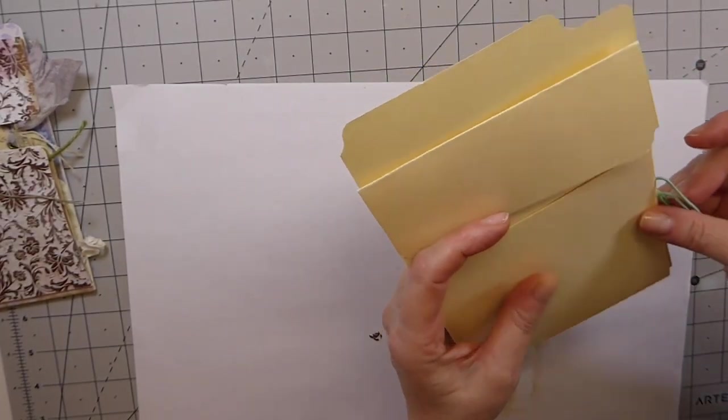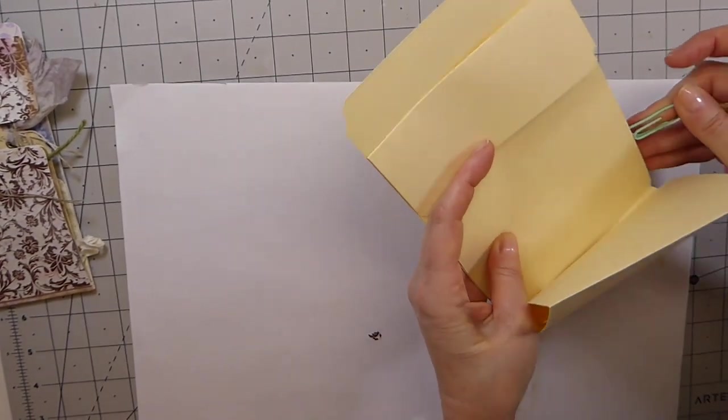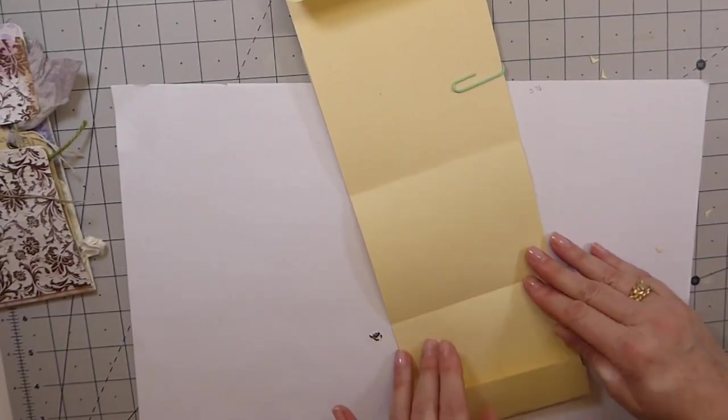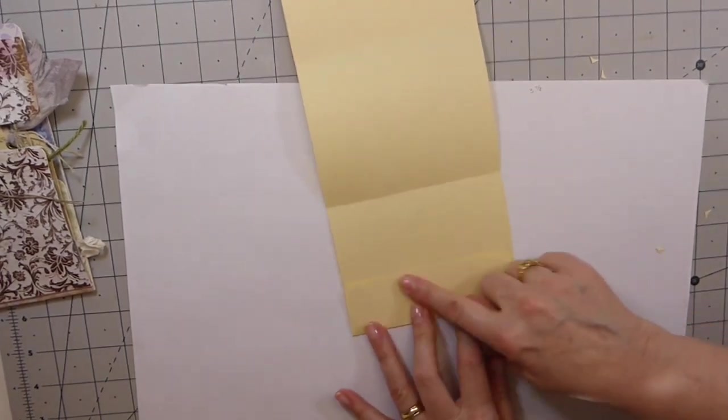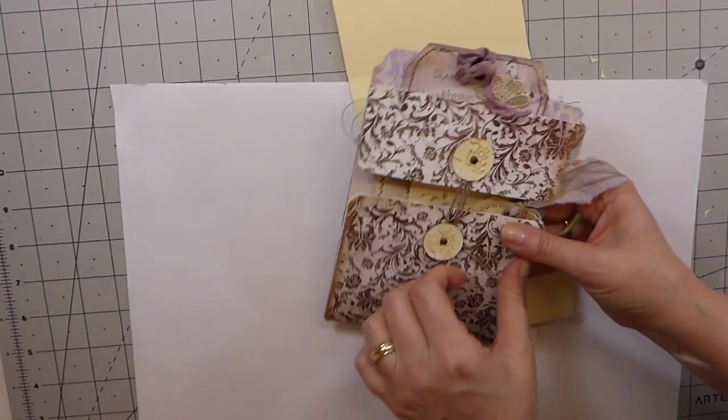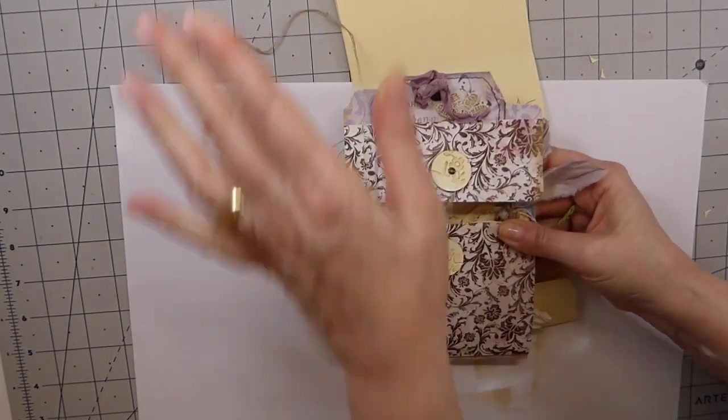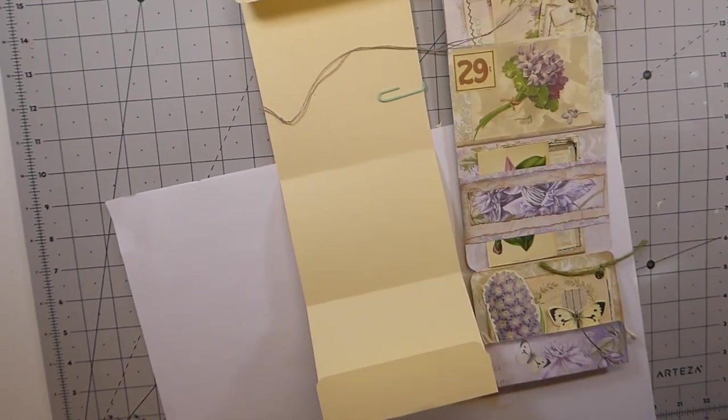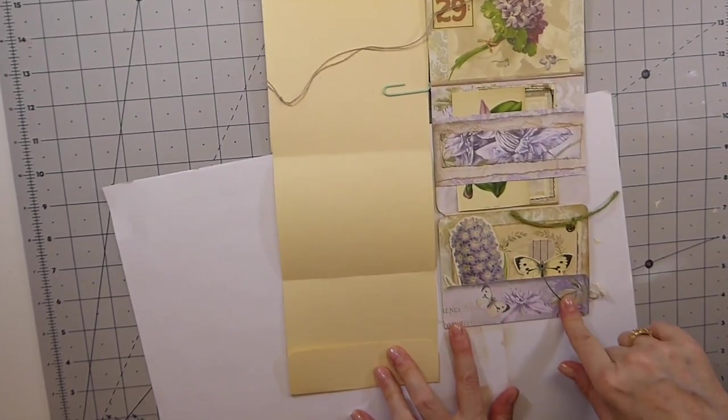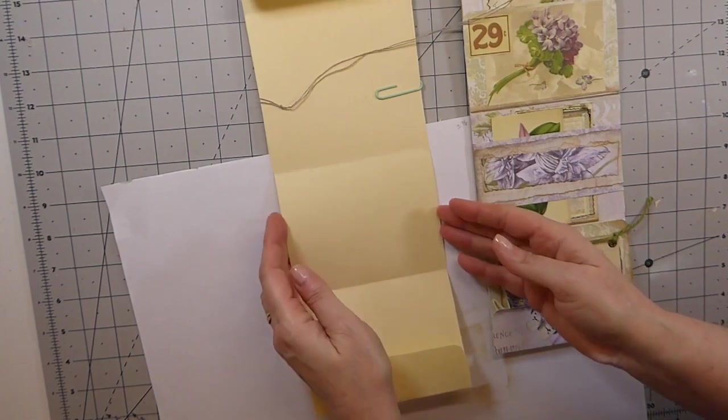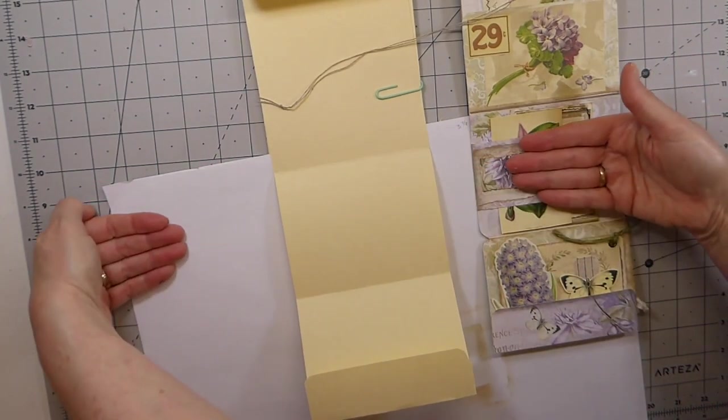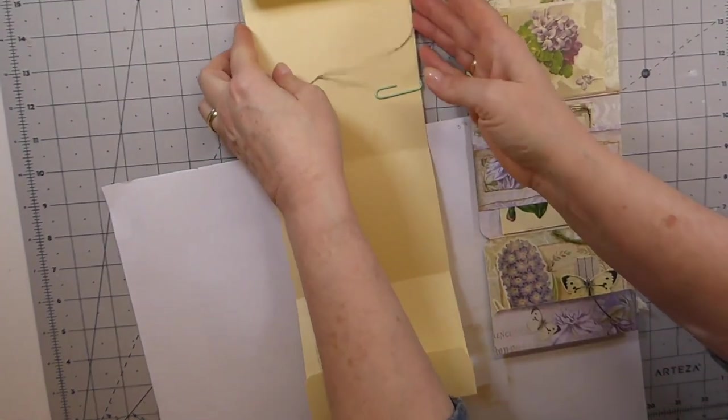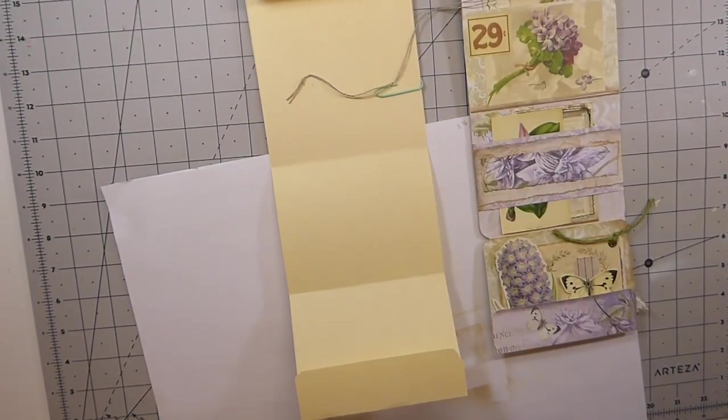And I just want to say that you can take this project much further because what this ends up being is the pocket here, right. Let me open it up so you can see. See I formed a pocket, right. But what you can do with this if you want, you could even add a couple more extensions here.